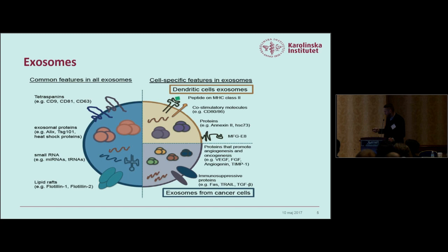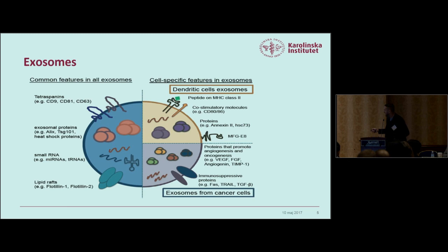To characterize exosomes, when you probe a sample you will see common proteins such as tetraspanins, ALIX, TSG-101, certain small RNAs, and lipid rafts. But depending on the source cell, there will be specific components encapsulated and presented on these vesicles. In dendritic cells you will find MHC class II molecules with peptides, while in cancer cells we can find VEGF and other growth factors stimulating cancer growth.